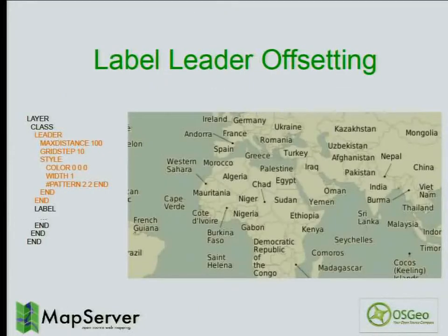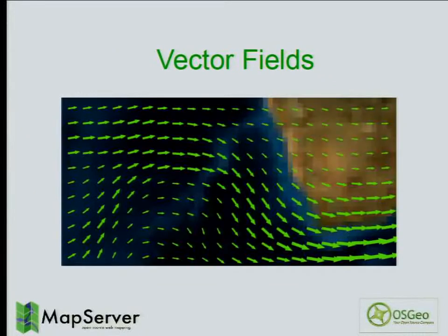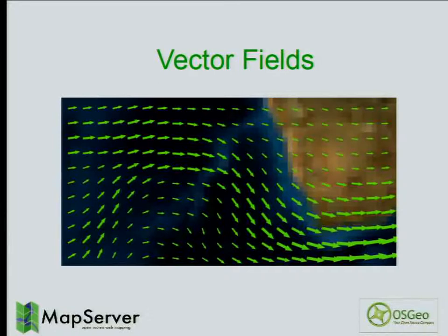Another feature was label leaders, which allows you to label smaller polygons even when the label cannot fit inside. And vector fields for weather visualization — a useful way to display natural phenomena like wind direction. The input is two raster bands of U and V vector values, and MapServer automatically samples the raster and computes on the fly the vector direction and magnitude based on the spacing specified in the map file, giving you vectors that are always consistent as you zoom in and out.